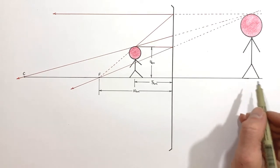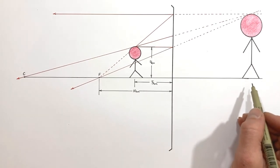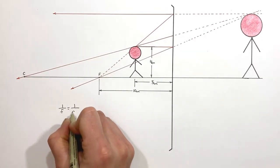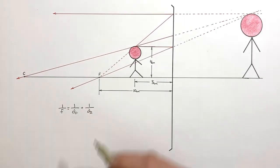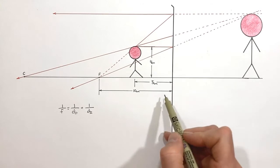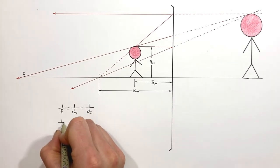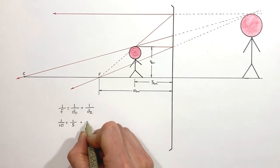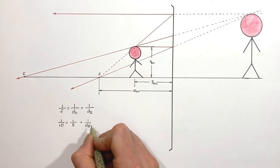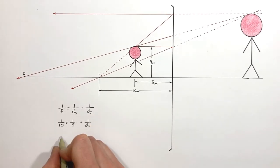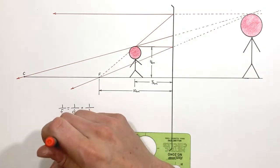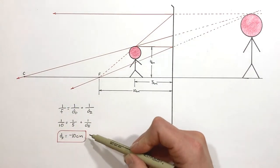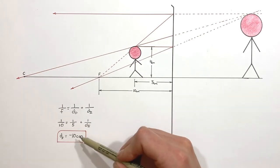This result might seem a little strange, so let's go through and take a look at the mirror equation in order to confirm it. In this problem the focal length is 10 centimeters and the object distance is 5 centimeters. Solving for the image distance, we find that it is negative 10 centimeters.